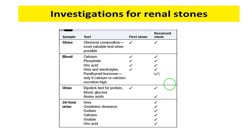In summary, we analyze the chemical composition of the stone if available. Blood tests include calcium, phosphate, uric acid, urea and electrolytes, and parathyroid hormone. Urine is tested for pH, dipstick (protein, glucose), and amino acids. If the stone is recurrent, a 24-hour urine collection is performed to measure additional analytes that may be causing the renal stone.